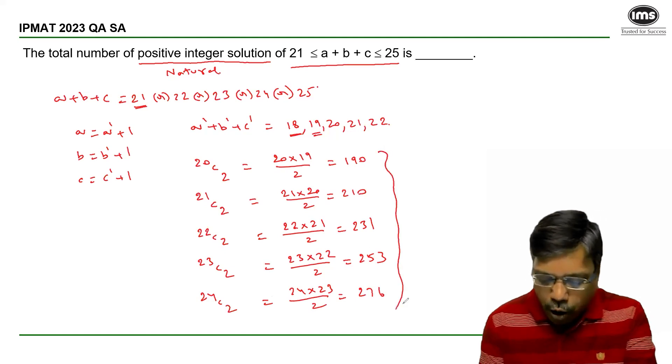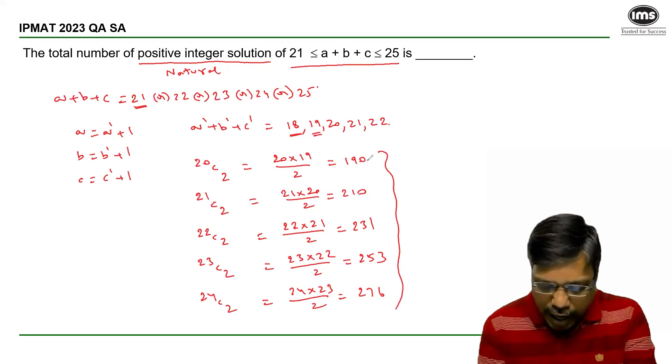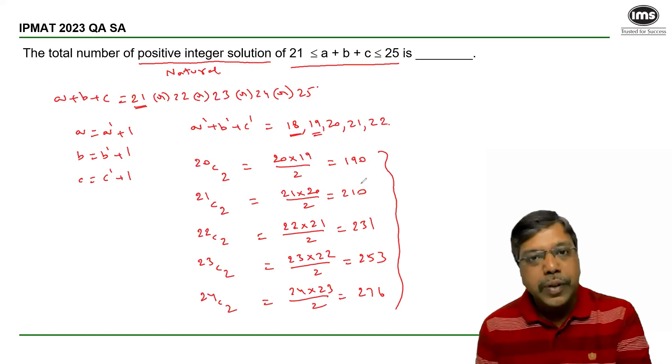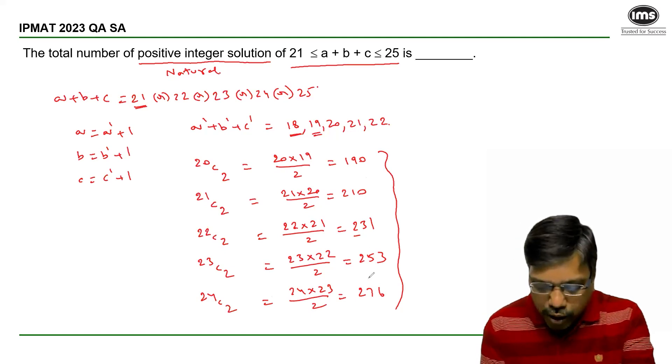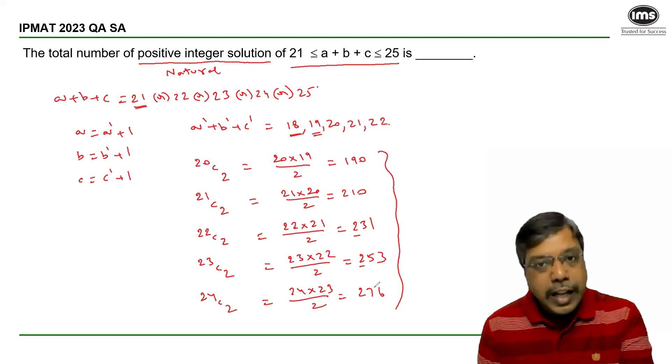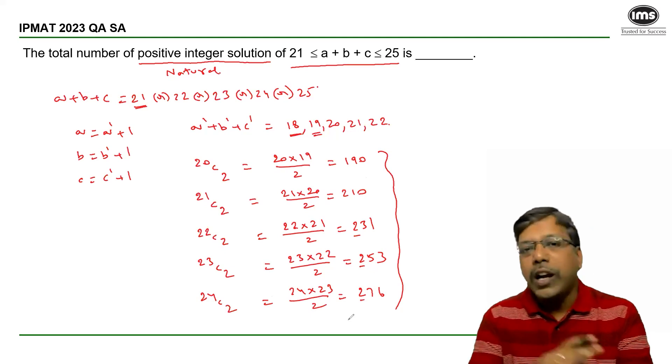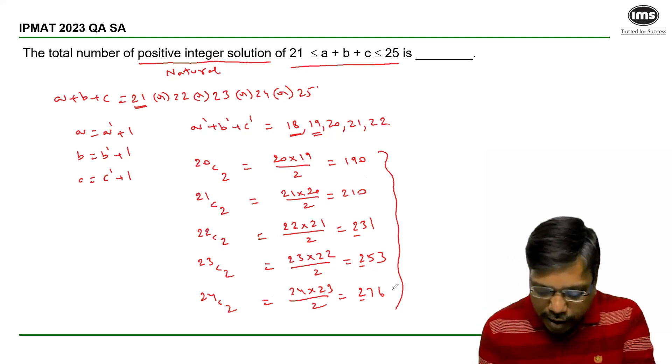So the sum of all these: 190 and 210 is 400, then add 200 to get 600, then add 200 to get 800, and add 200 to get 1000. Now, if I look at the remaining values,